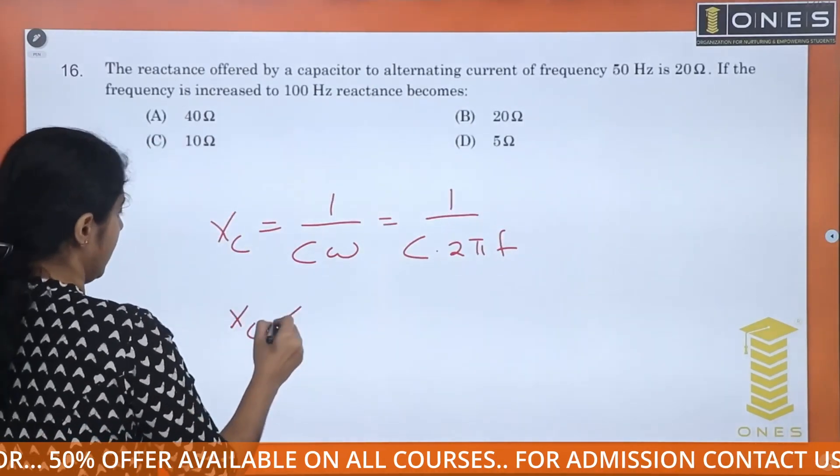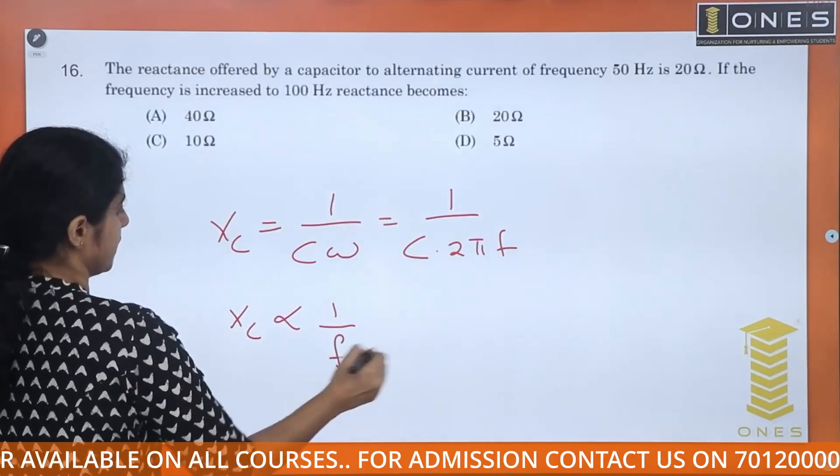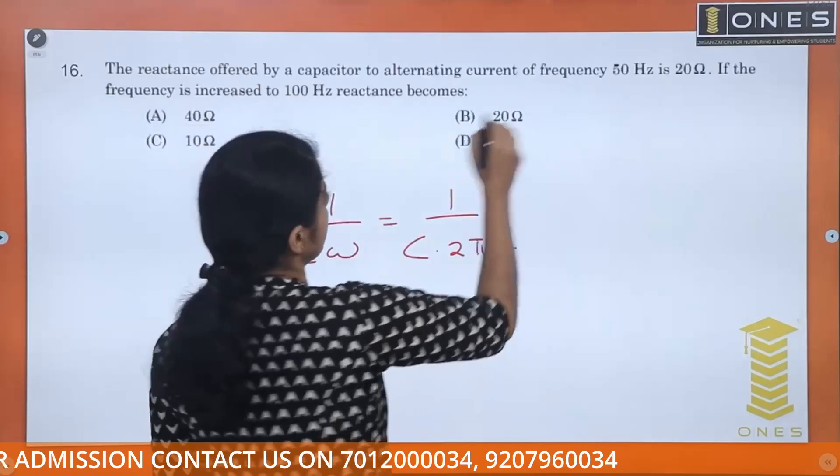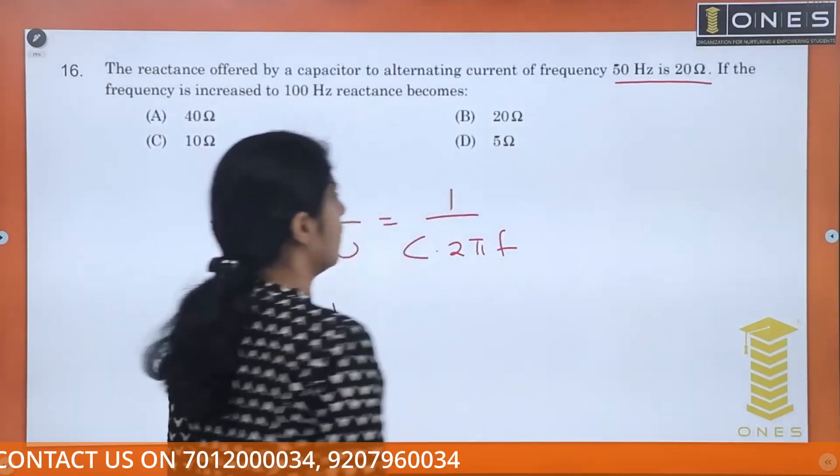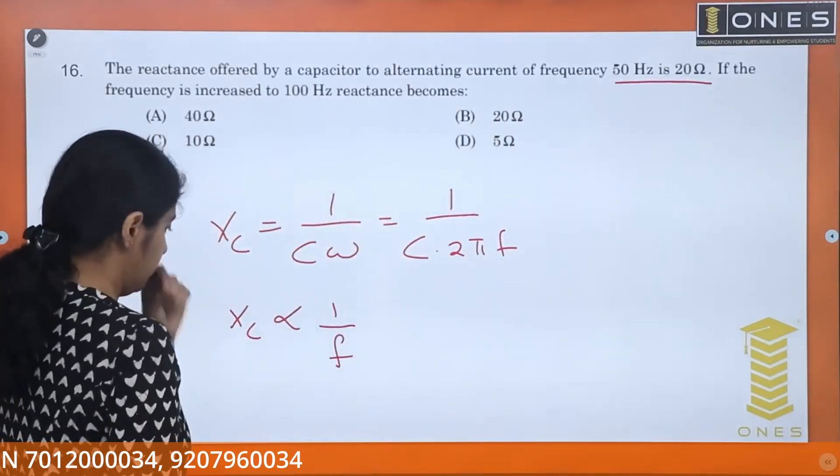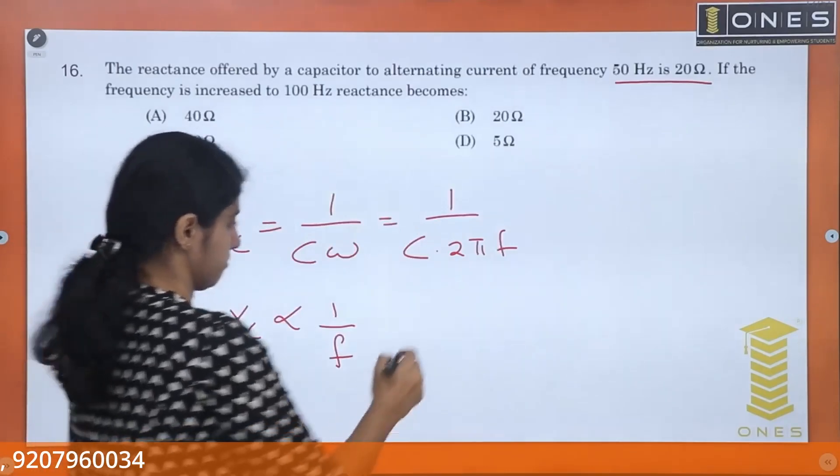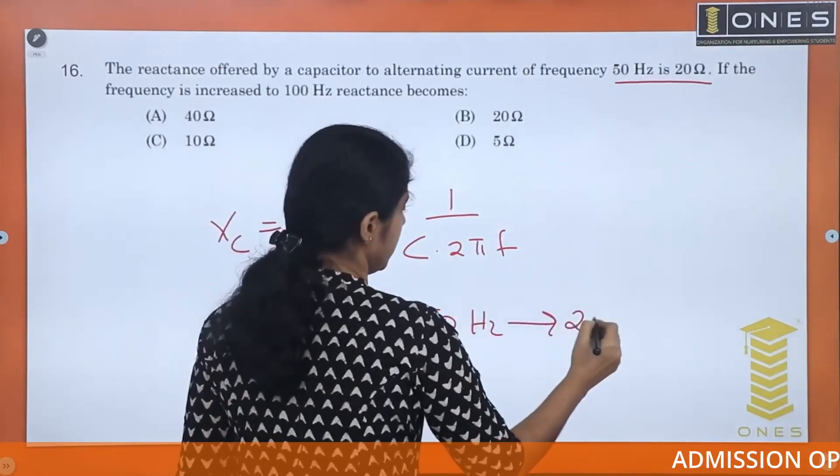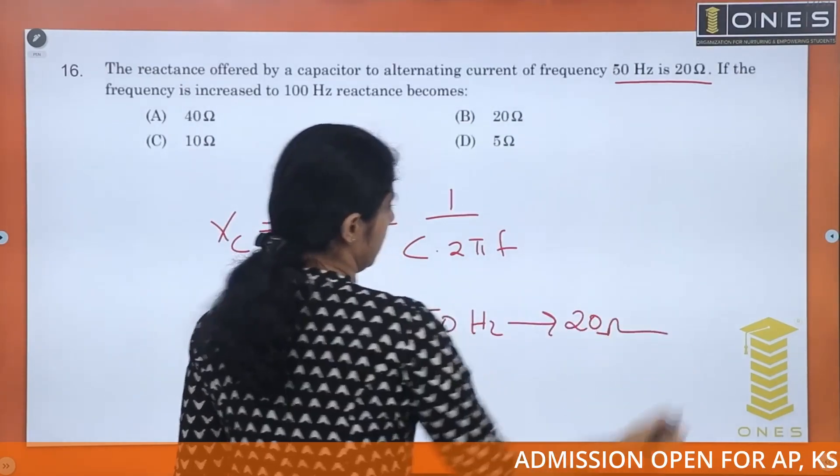Xc is inversely proportional to frequency. The reactance offered by a capacitor at 50 Hz is 20 ohm. At 50 Hz, Xc is 20 ohm.